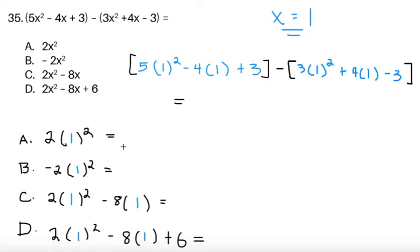So choice A, 2 times x squared is 2 times 1 squared. This gives me 2. For B, it's negative 2x squared. So negative 2 times 1 squared. This gives me negative 2. For choice C, 2x squared minus 8x. That's going to give me 2 times 1 squared minus 8 times 1, which is 2 minus 8. This gives me negative 6. And then for the last choice, 2 times 1 squared, that's 2 minus 8, which gives me negative 6, but I'm adding 6. So this gives me 0. So make sure if you're trying some values to substitute, you get four answers that are different so you can easily compare them and distinguish each one.